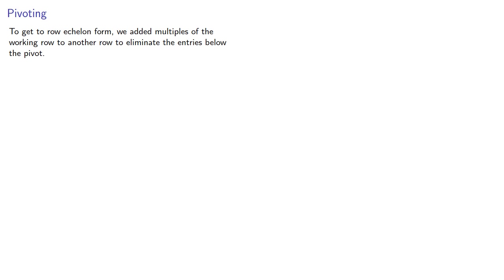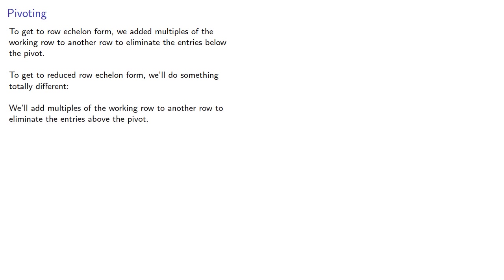To get the row echelon form, we added multiples of the working row to another row to eliminate the entries below the pivot. To get reduced row echelon form, we'll do something totally different — we'll add multiples of the working row to another row to eliminate the entries above the pivot.